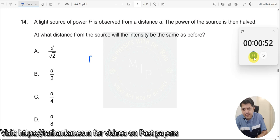First time, you have a power P and at a distance d over here, distance d, and then this power of the source is then halved. Second time, the power of the source is halved. At what distance from the source will the intensity be the same?